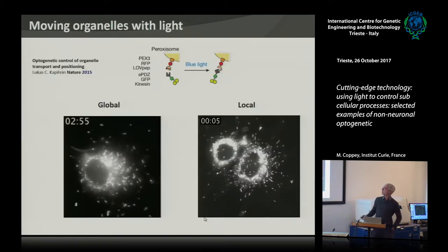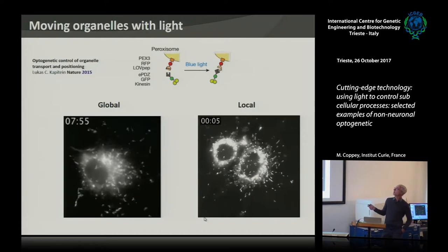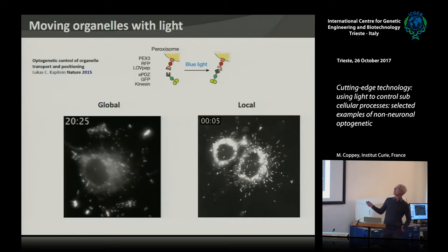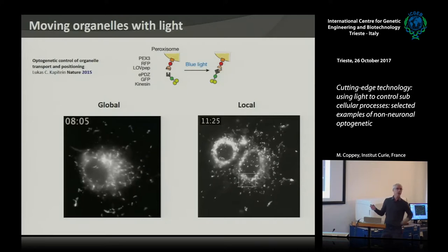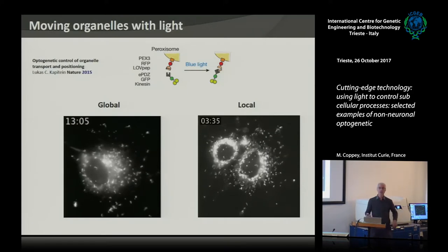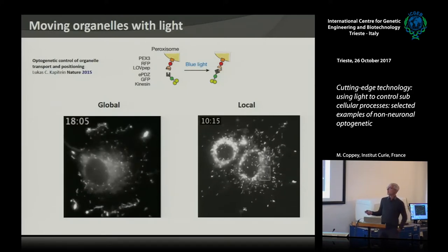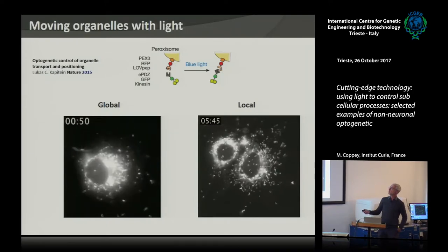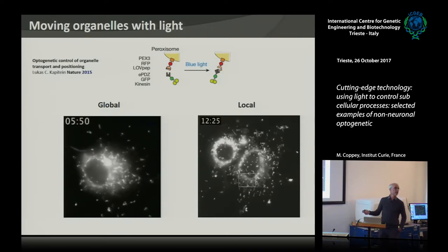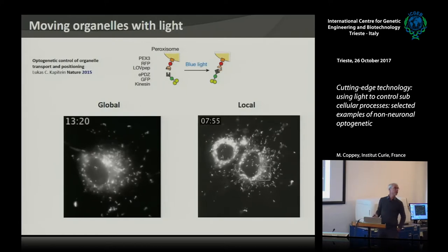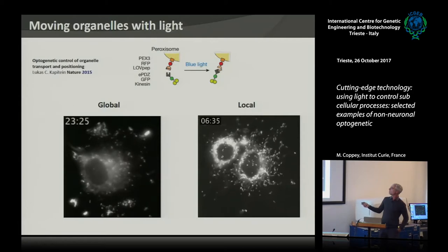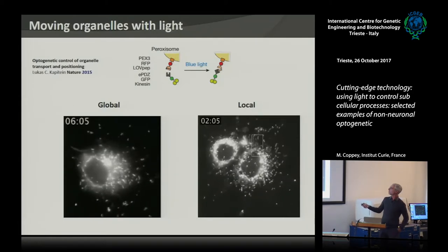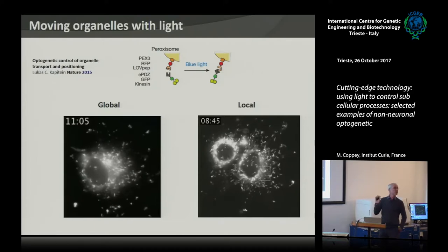For example, here is an application I like, where you use this to take organelles — in this case peroxisomes — and make a light-gated dimerization system that anchors them to motor proteins. In this case it's kinesin-5, and you see that at the beginning the peroxisomes are in the middle of the cell, and as soon as you shine light you shoot them out to the membrane. You can do that locally by shining light at different places, sending organelles to the periphery with subcellular resolution.